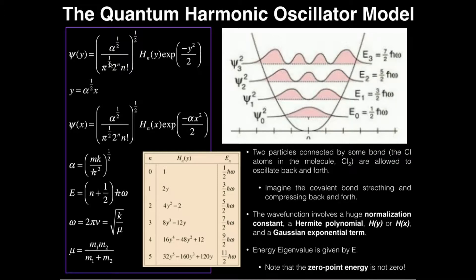Unfortunately, with the quantum harmonic oscillator you can't just memorize wave functions like we could with particle in a box — you have to construct it from the information given. We have different energy levels given by n. This n is not the same n as in the particle-in-a-box model; that n started at one and could not be zero. Suppose we have n equals 1. For the normalization constant we have alpha to the one-half, pi to the one-half, and we plug in n=1: so 2 to the first is 2, and 1 factorial is 1. For the Hermite polynomial, we come to the table and pick the appropriate one — for n=1, that's 2y. The Gaussian exponential term just comes along for the ride; it does not change.